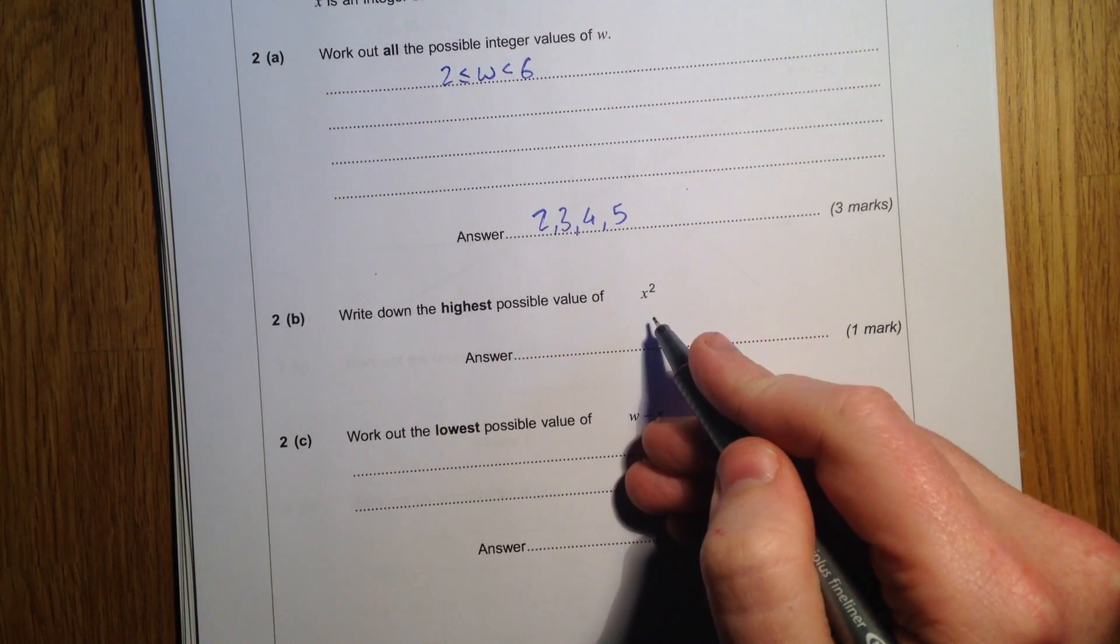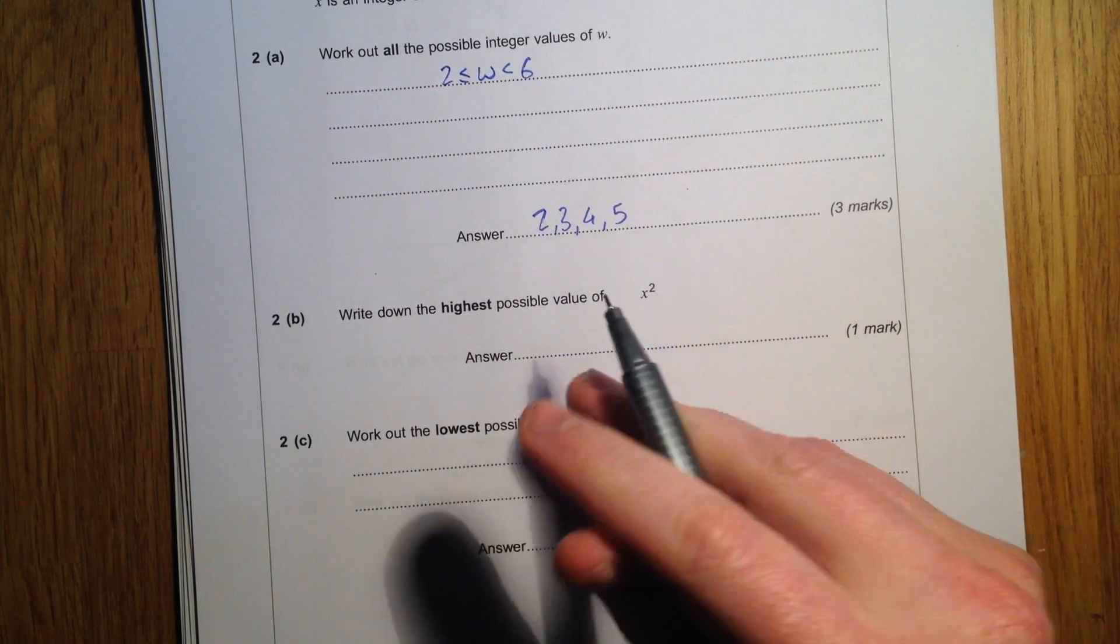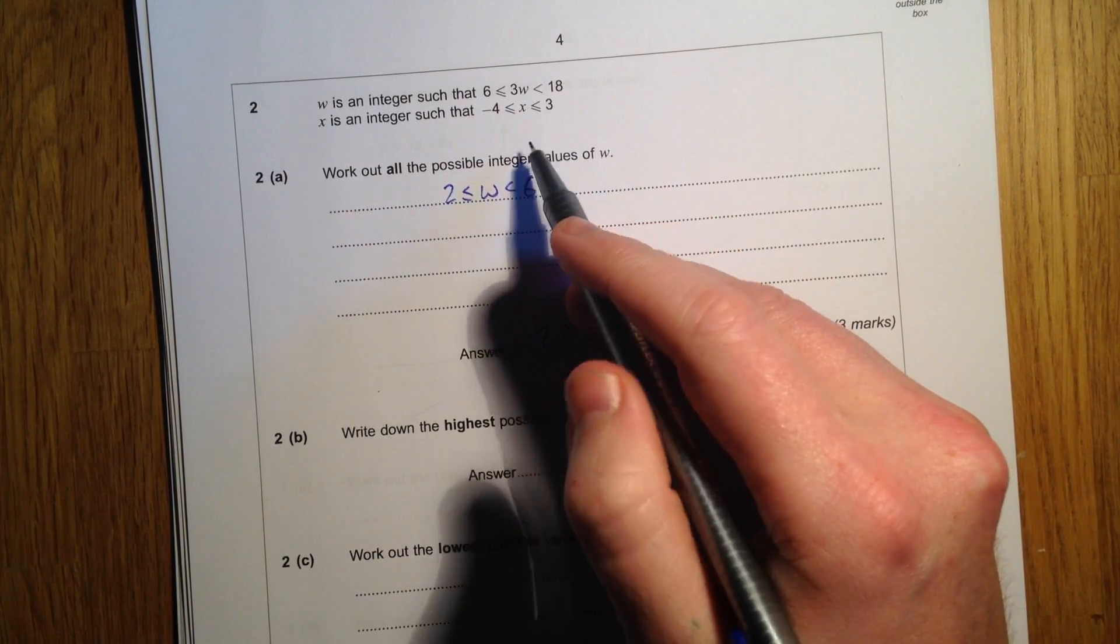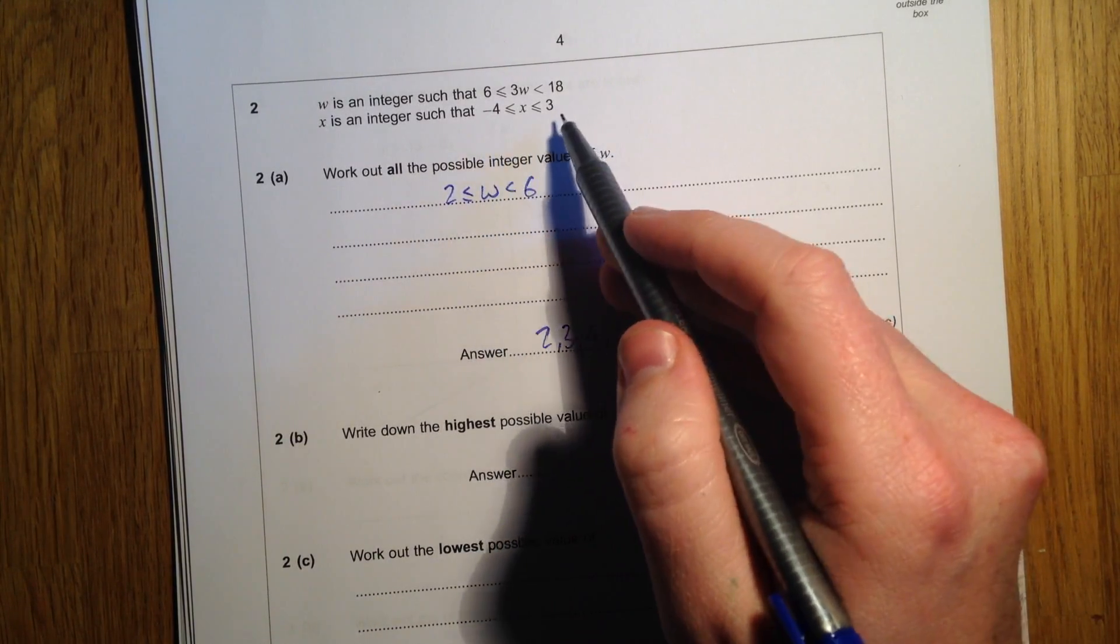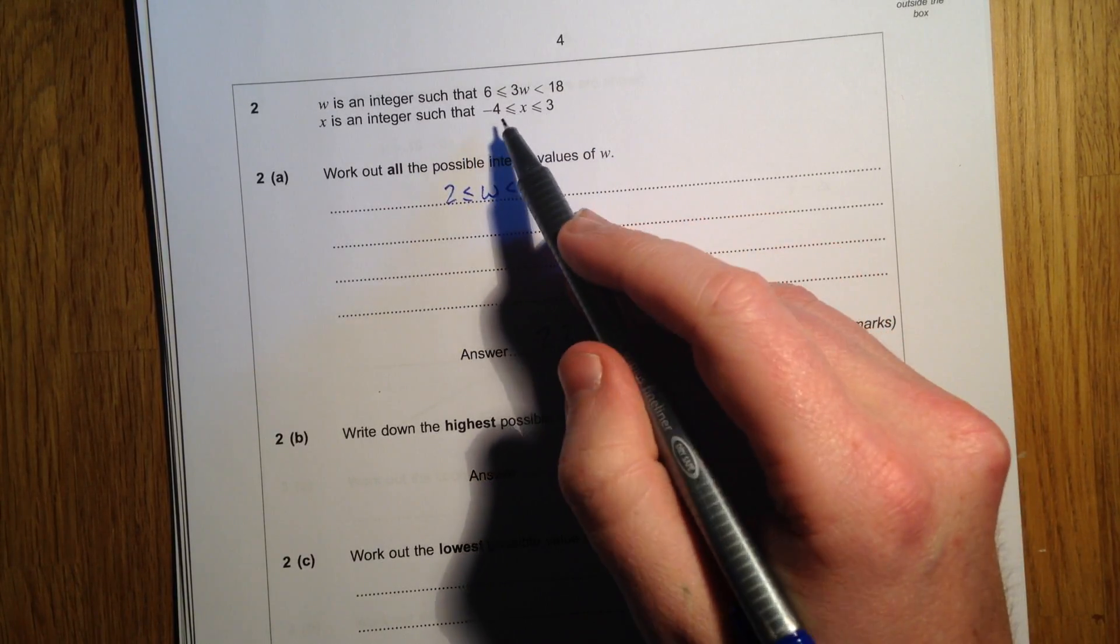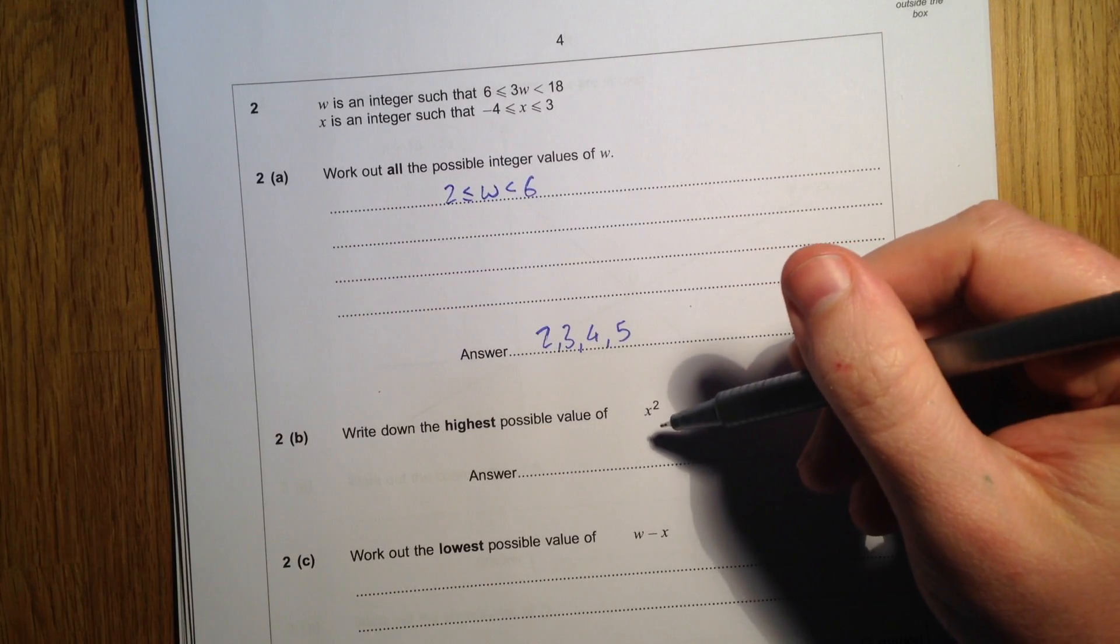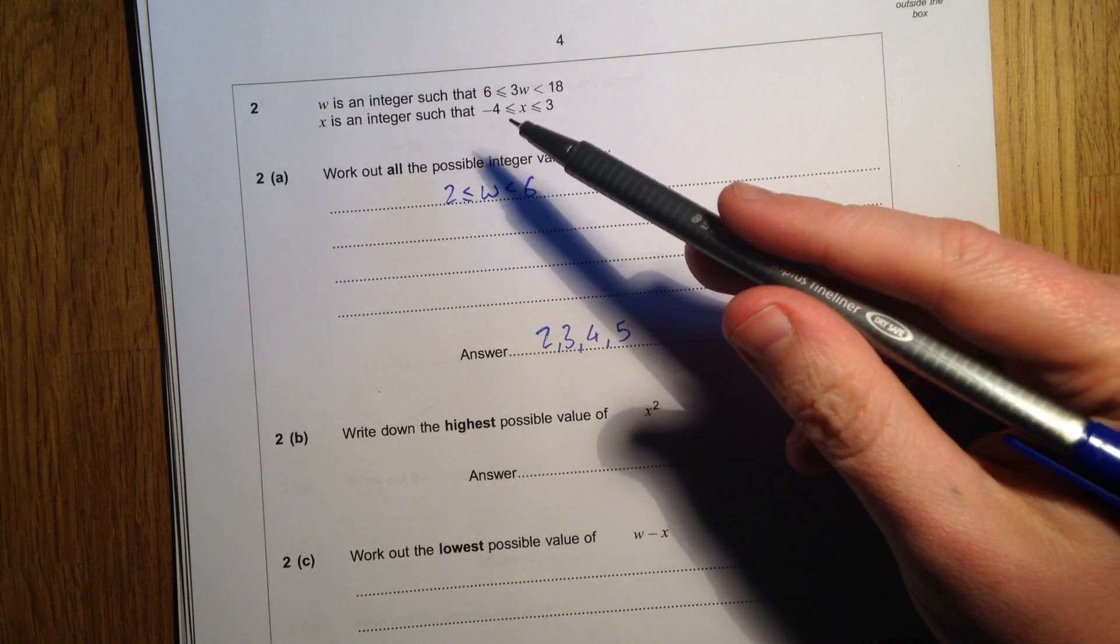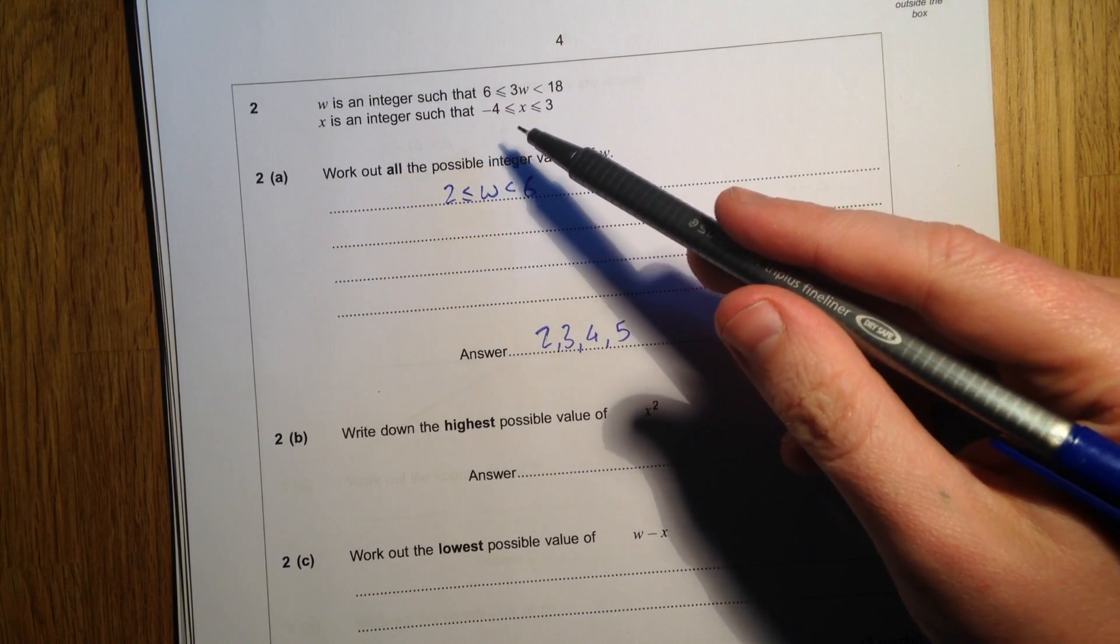Work out the highest possible value of x squared. Well, we could work out all the values of x and then square them. But I know that when we square a number, we get a positive even if the number is negative to start with.